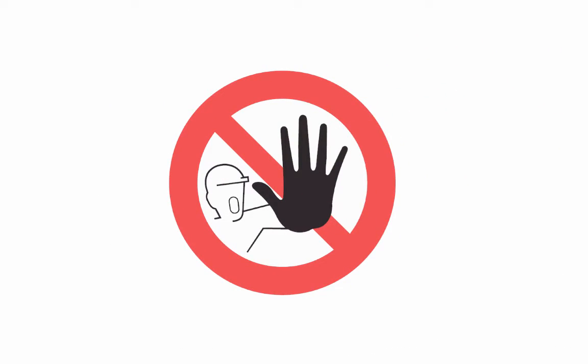The next important qualification to establish a prescriptive easement is that the use must be adverse. What this means is that the use must be done without permission from the owner. In our driveway example, your neighbor cannot tell you that she knows the driveway is on her land, but that it is okay for you to keep it there. If your neighbor does this, she's giving you permission, and your claim is no longer adverse to her interest. This does not mean, however, that your neighbor would have to know about your use — only that they cannot give you permission.